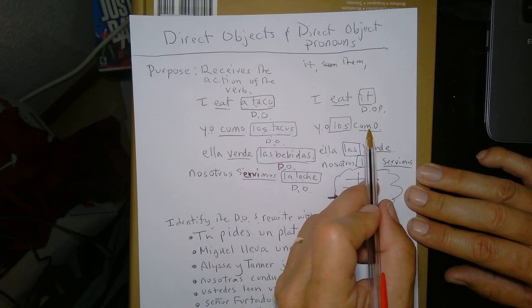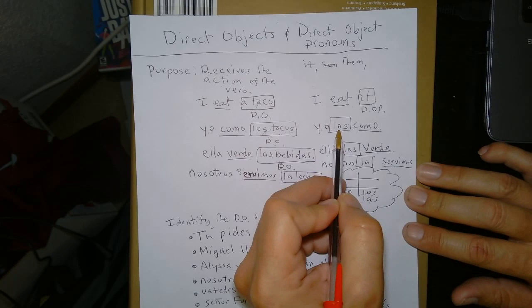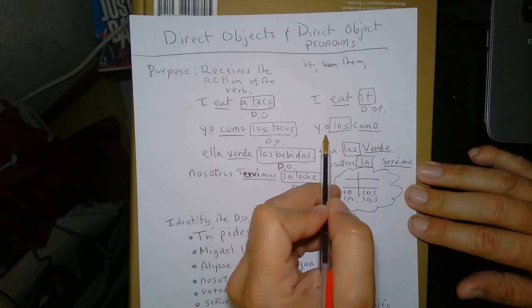But we would want to use los. Because that's agreeing with that. So, this is masculine and plural. And so is tacos. So, I'd say yo como. And then I'm going to put los right here. And this is the second thing that's important to recognize. Where we put the direct object pronoun. This is different than English.